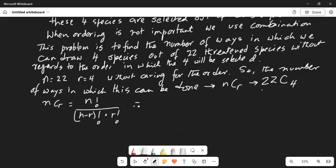So in our case this will be 22 factorial divided by 22 minus 4 factorial and 4 factorial.